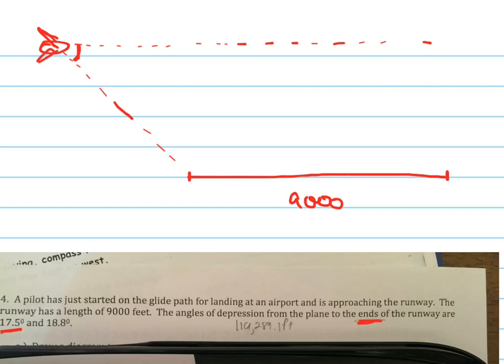and I'll do the other one in a different color. The other angle of depression is going to be the line out to that side, and that's the other angle of depression. So the smaller one is going to be the one that's further out.